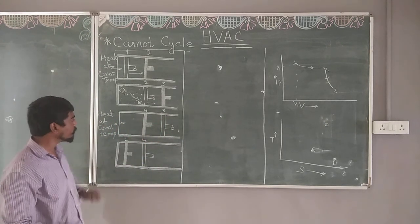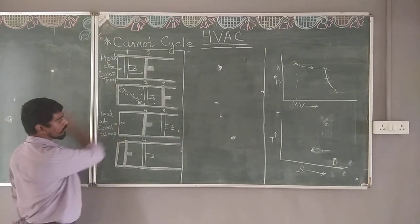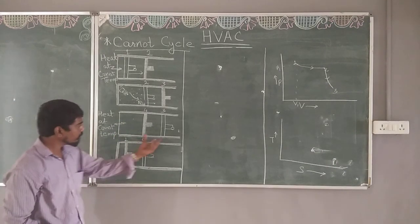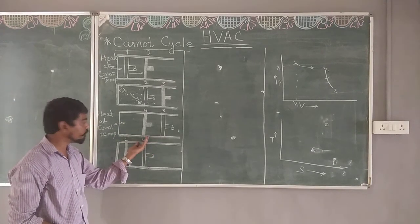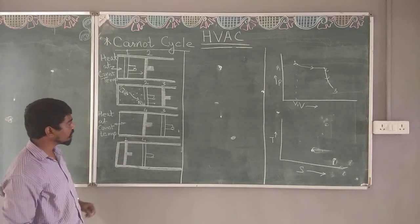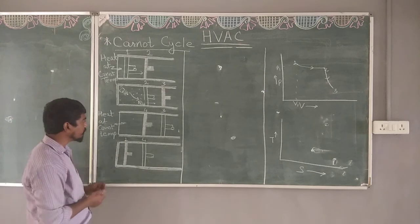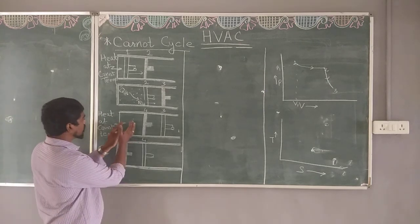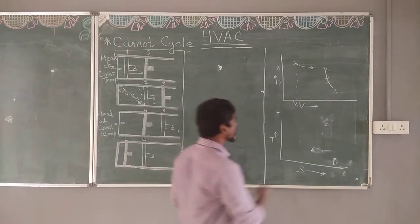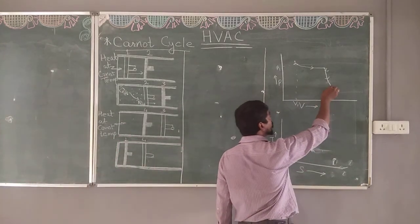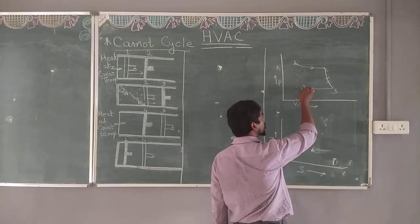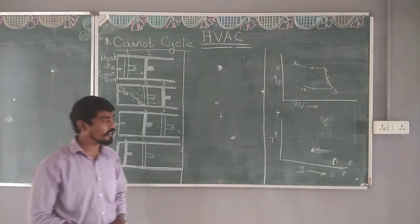In process 3 to 4, the insulation is removed and heat is extracted out of the system as the piston moves from 3 to 4. There will be a small rise in pressure because the heat is continuously removed, but due to the movement of the piston there will be considerable change in volume. This is process 3 to 4 on the PV graph.